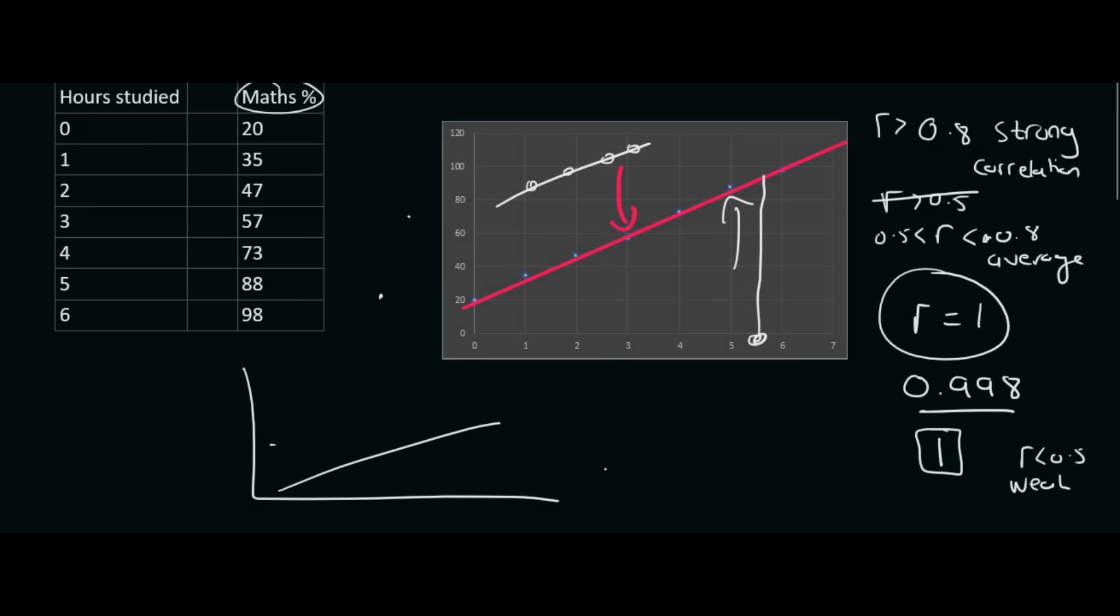Then you can also get negative r values. It's the exact same. That's just if the line is going downwards. Minus 1 is perfect. Between, or anything above 0.8 is called strong. Between 0.5 and 0.8, well in this case it would be negative 0.5 and negative 0.8, that's average. And then anything smaller than 0.5, sorry negative 0.5, that's going to be considered weak.